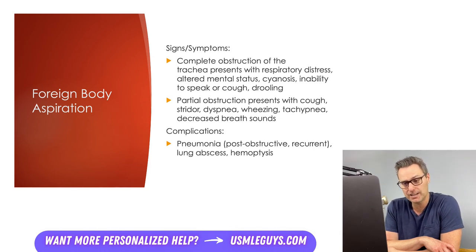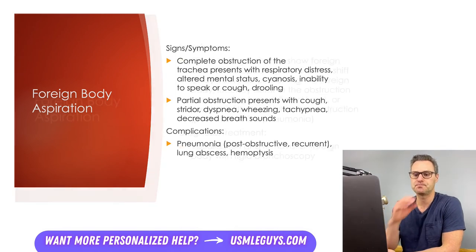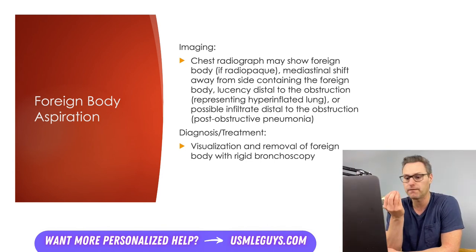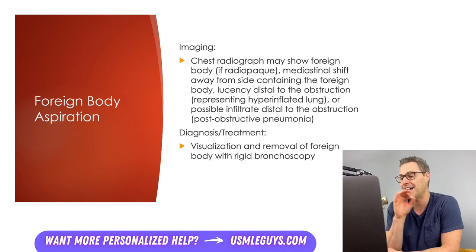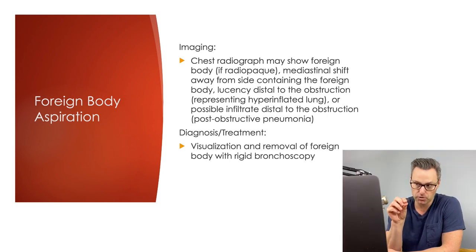Obstructive pneumonia usually presents as a typical community-acquired pneumonia that initially improves with antibiotics but then reoccurs; on chest radiography, the infiltrate usually doesn't resolve even with temporary symptom resolution. Other complications include lung abscess formation and hemoptysis. If the patient is stable, the first component of the workup is a chest radiograph. While normal in around a third of cases, it can also show mediastinal shift away from the side containing the foreign body, lucency distal to the obstruction representing a hyperinflated lung from trapped air, or infiltrates distal to the obstruction. Around 10% of the time the foreign body is radio-opaque. Patients with identified or presumptive foreign body aspiration will undergo rigid bronchoscopy to both visualize and remove the foreign body.